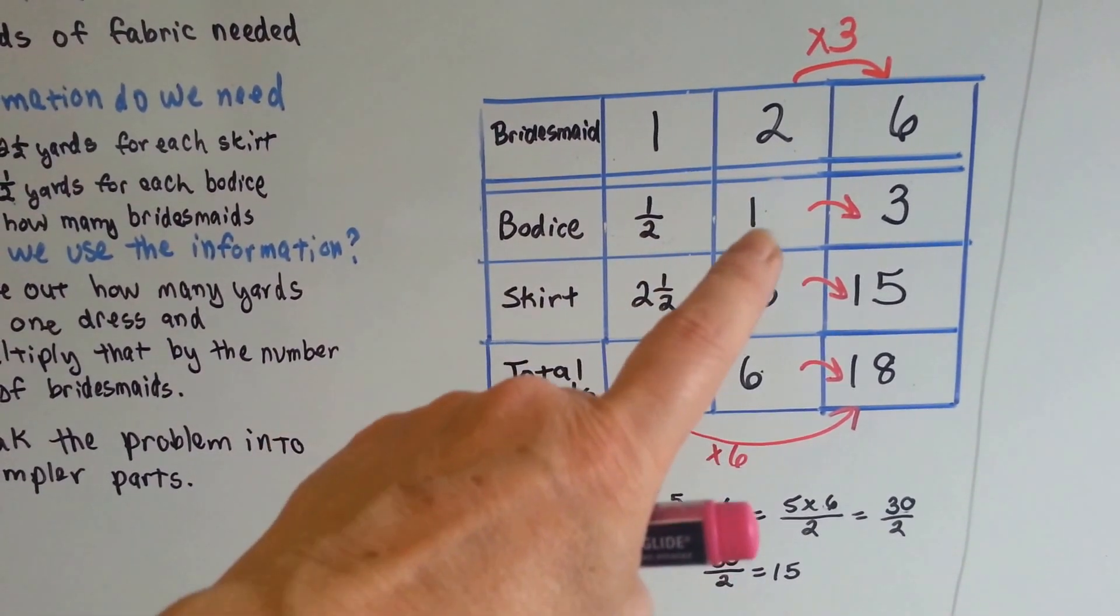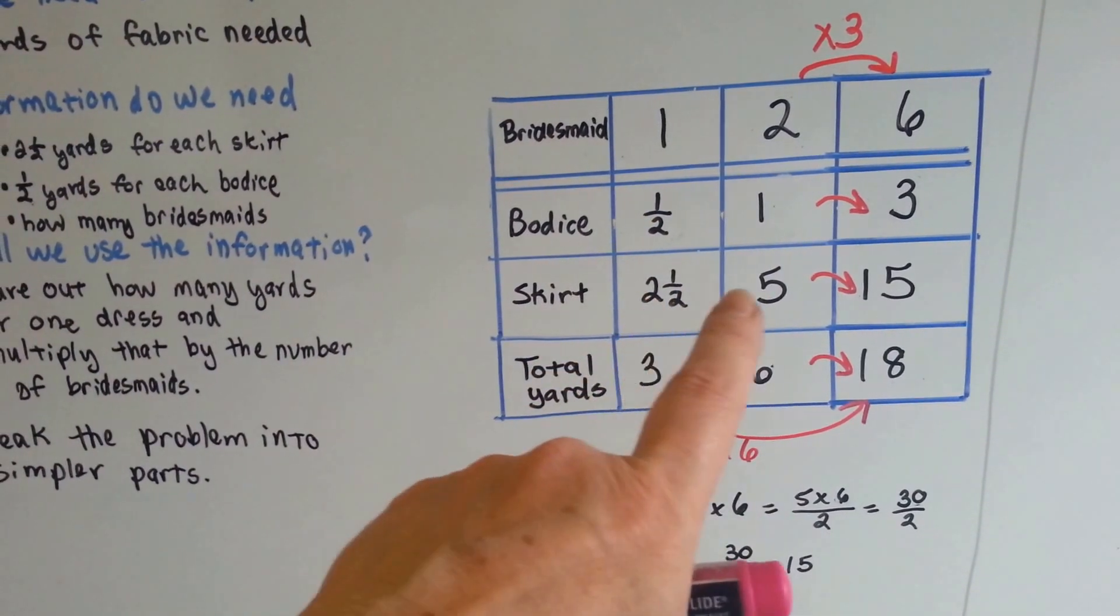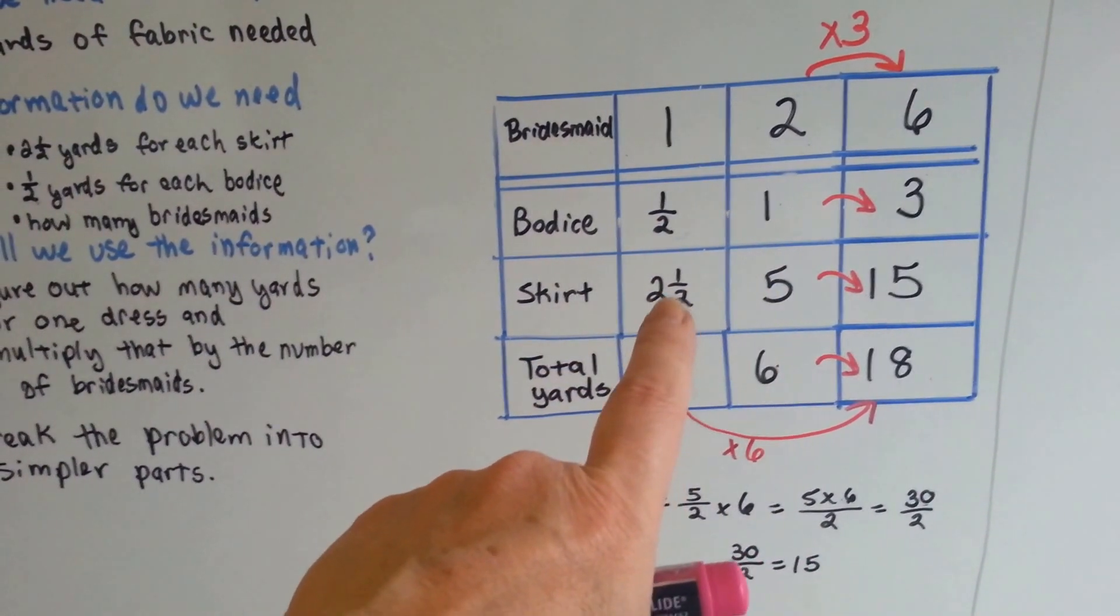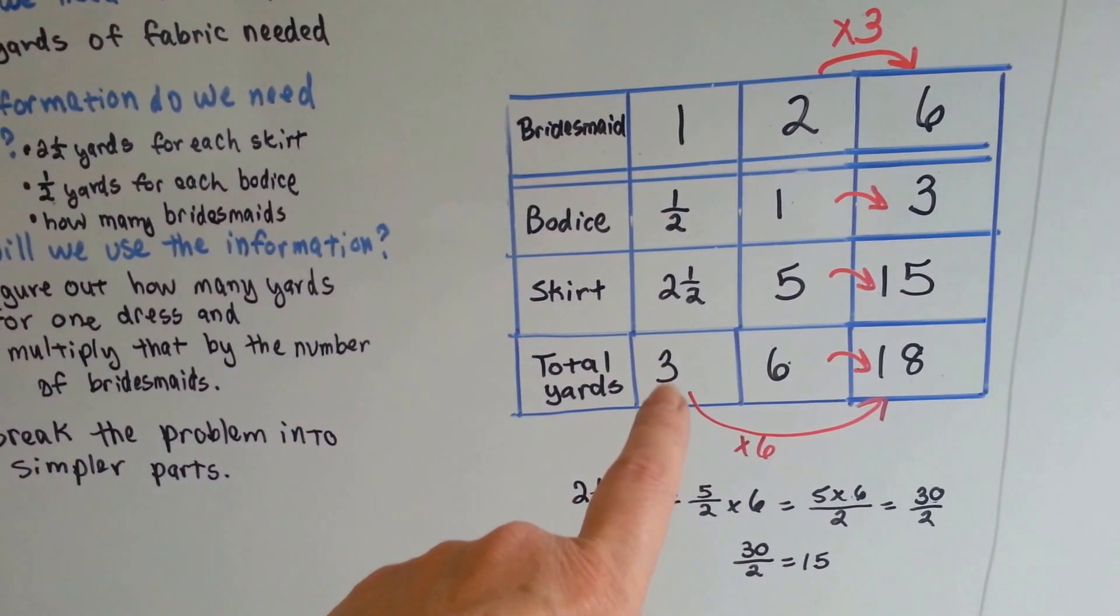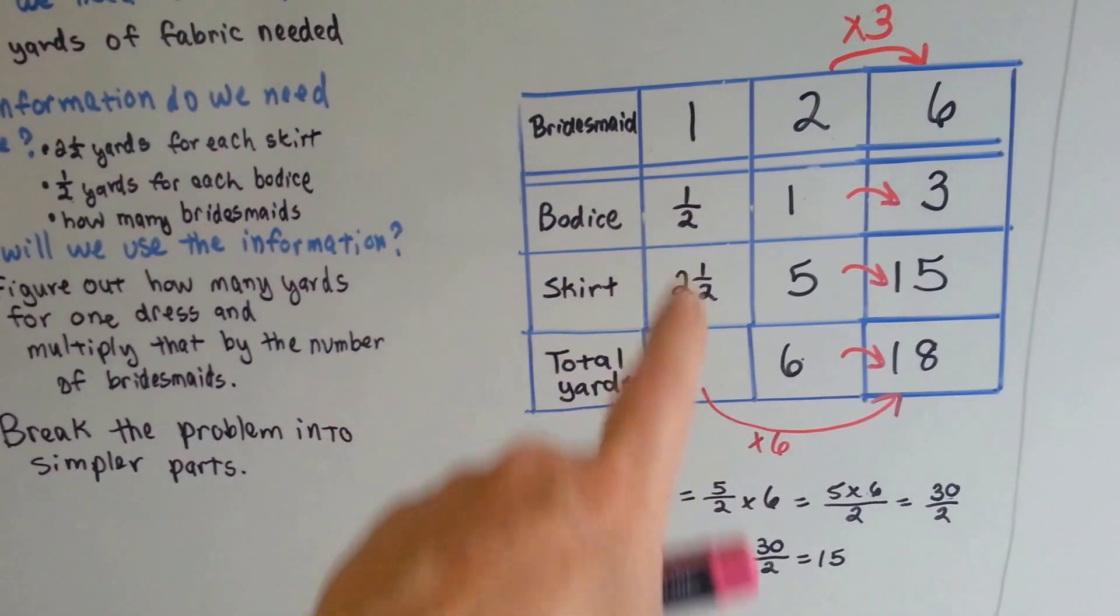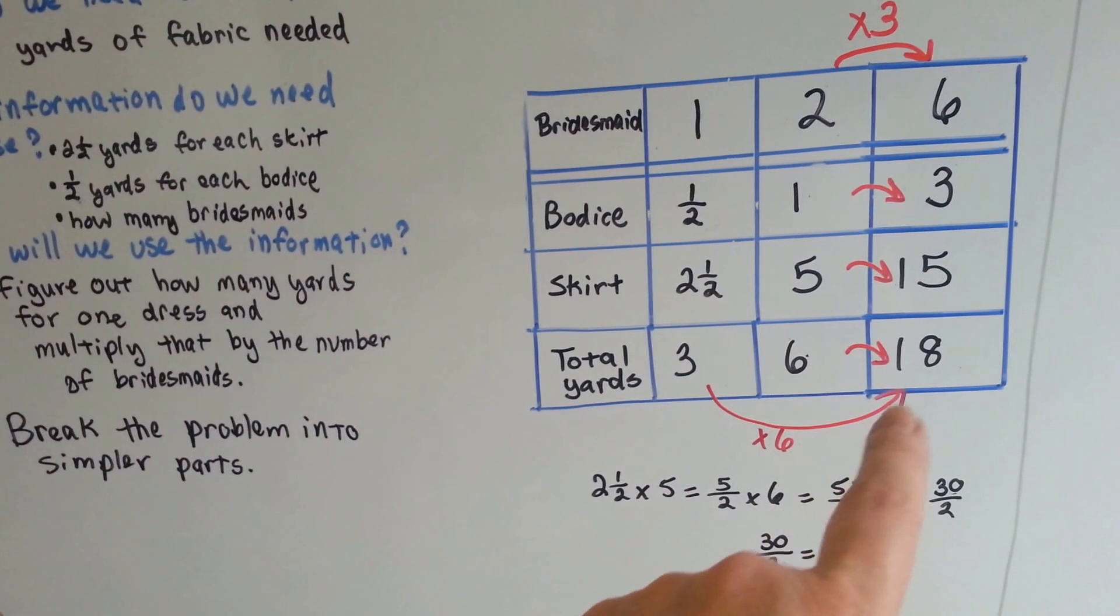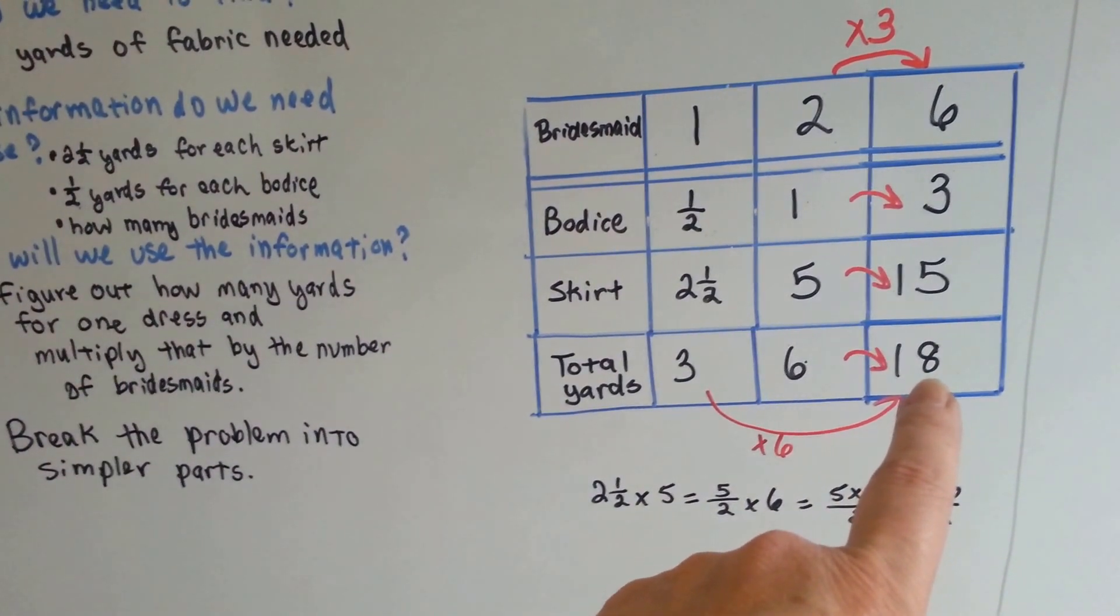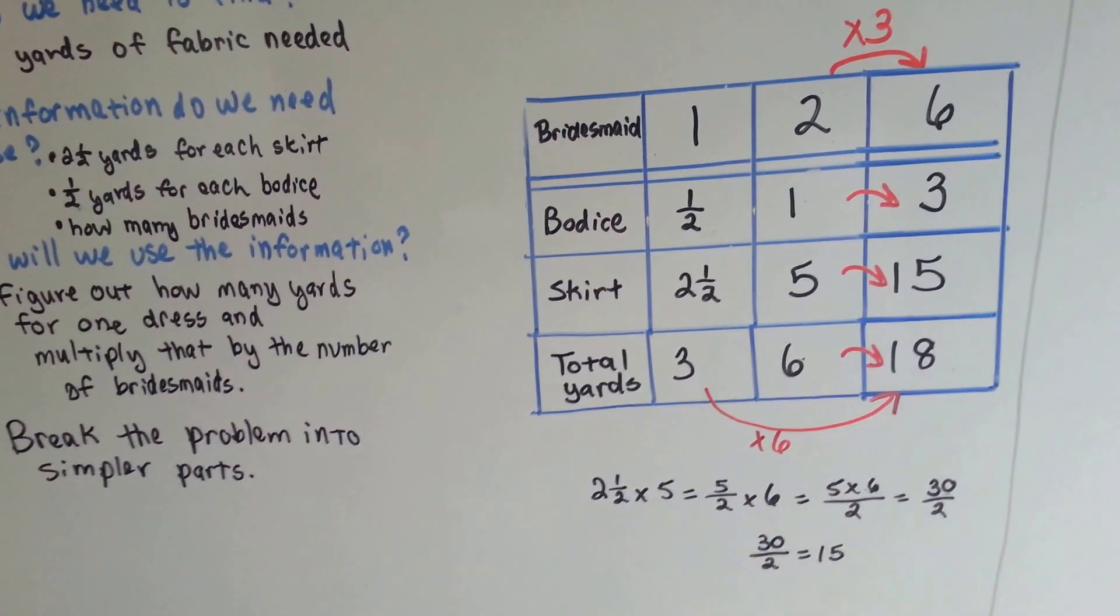For two bridesmaids, she'd need one yard because a half and a half is one. And she'd need five yards for the skirt because two and a half and two and a half is five. And then we can just double the total yards. If one is three yards, then two is six. Or we could just multiply the whole thing by six for six bridesmaids and know that we need eighteen yards.